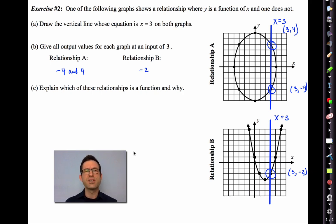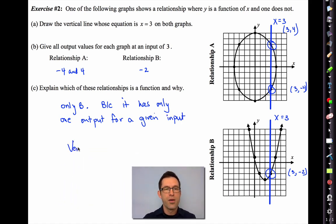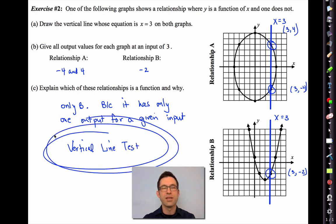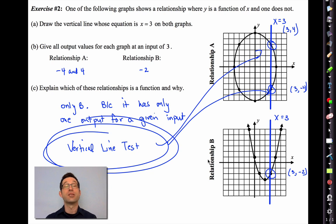Now letter C asks us to explain which of these relationships is a function and why? Well, only B. And the reason is because it has only one output for a given input. This leads to what's called the vertical line test. All students who study functions have heard of this guy, the vertical line test. And the vertical line test is relatively easy. It just says, look, if I draw a vertical line like I did in relationship A, and it hits more than once, then it's not a function. But if it hits only once, then it is a function. The vertical line test is helpful to quickly tell whether a graph is the graph of a function or not.